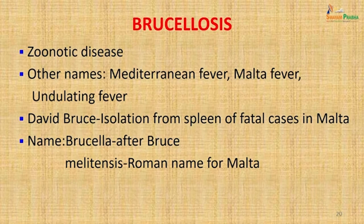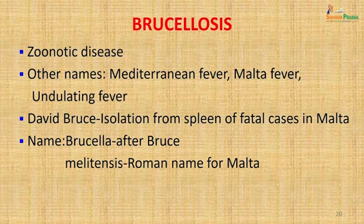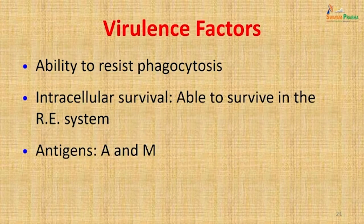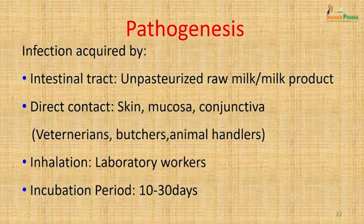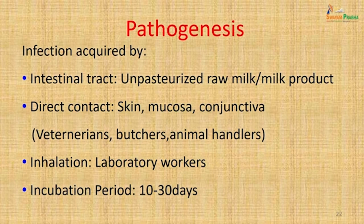Brucellosis is essentially a zoonotic disease, also known as Mediterranean fever, Malta fever, or undulating fever. David Bruce first isolated it from the spleen of a fatal case in Malta — the name Brucella came from Bruce, and melitensis from the Roman name for Malta. Its virulence is attributed to its ability to resist phagocytosis and survive intracellularly in the reticuloendothelial system. It has two antigens: the A antigen (abundant in B. abortus) and the M antigen (abundant in B. melitensis). Infection is acquired through the intestinal tract via unpasteurized milk or dairy products, or through direct contact via skin, mucous membranes, or conjunctiva — typically seen in veterinarians, butchers, and animal handlers.